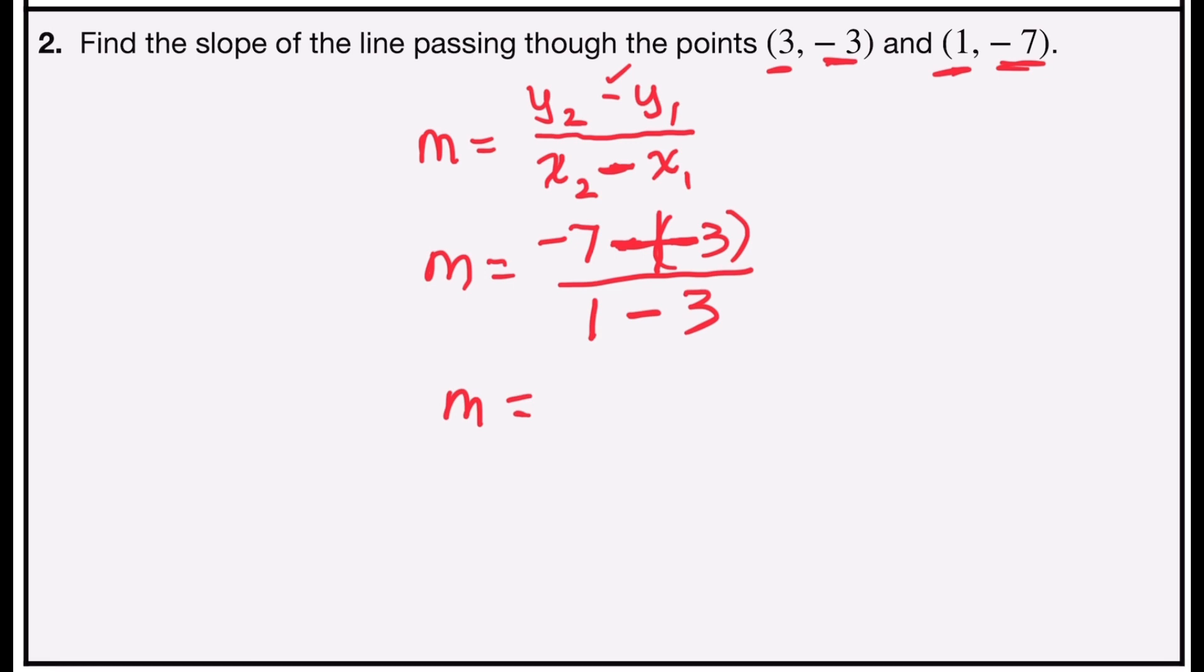So now I'm just going to simplify. -7 plus 3 is -4, and 1 minus 3 is -2. -4 divided by -2 is a clean division, and so I find out that my slope is 2.